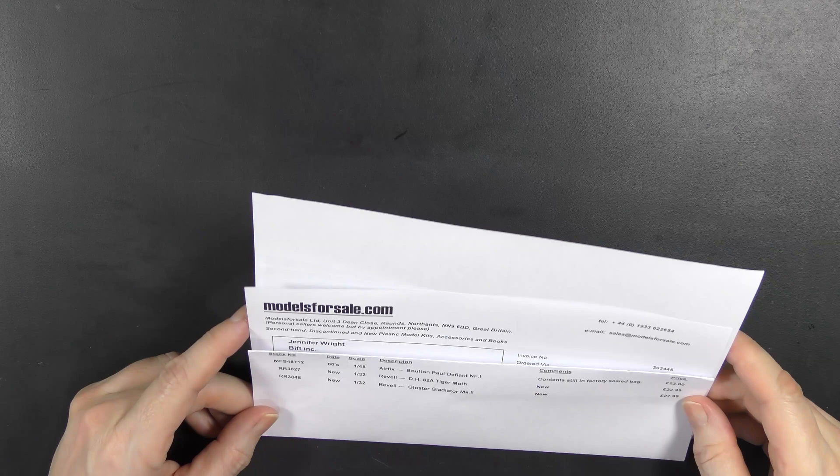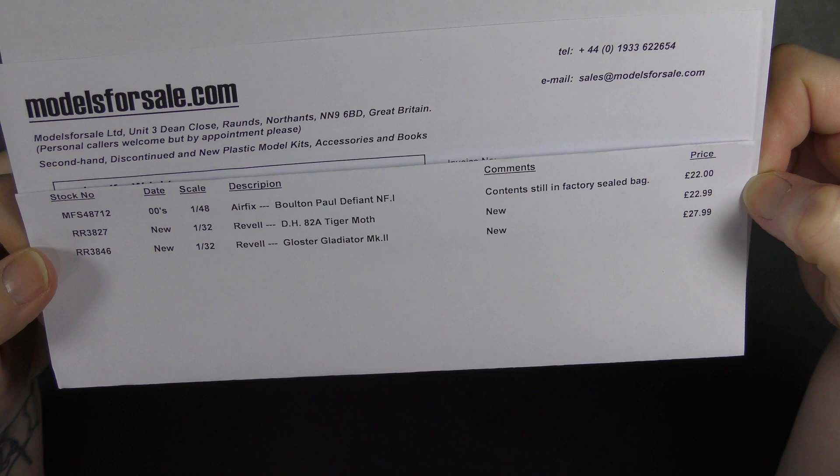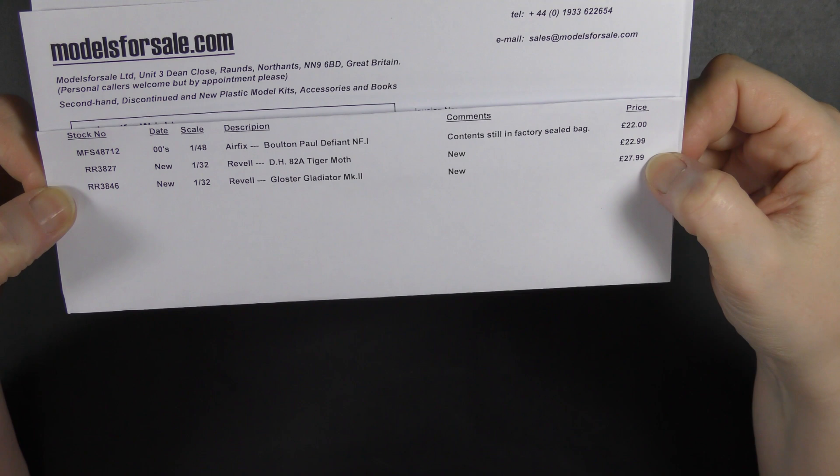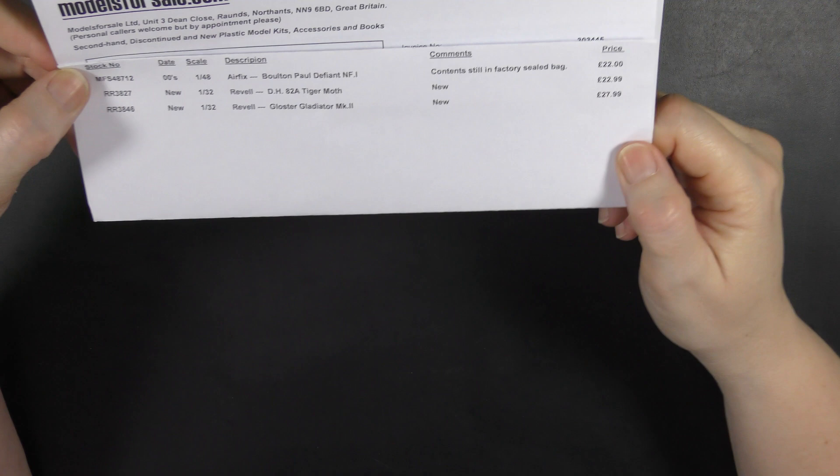There's the receipt of the invoice. £22.99 for the Tiger Moth, £27.99 for the Gladiator, which is an even better price, actually, than the Tiger Moth is. The ICM versions of that will set you back near a sort of 45-ish. Awesome prices. And on top of that, he's got several other Revell kits at great prices going on at the moment.